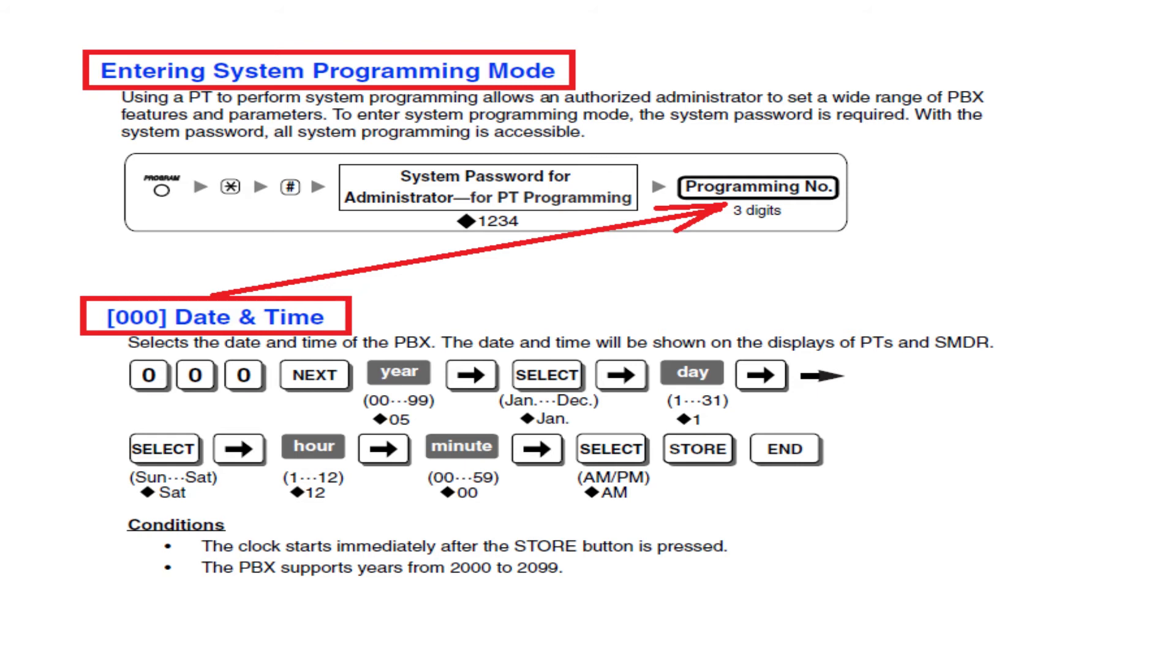Now your display asking for program number. Here you can press 000 to set up date and time. Now you can set up year, month, date, day, hour and minute. After pressing 000 then press SP phone. Then type the year from 00 to 99. Then press forward DND button to go to next and select month by using auto answer key.